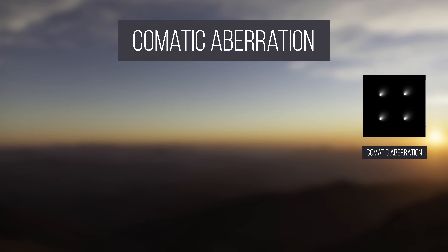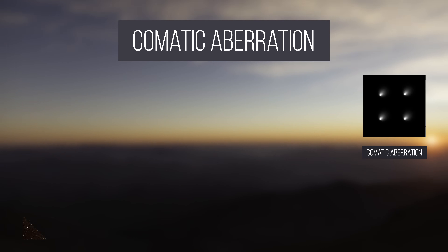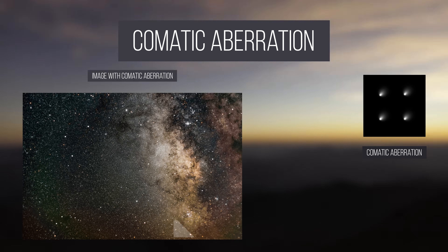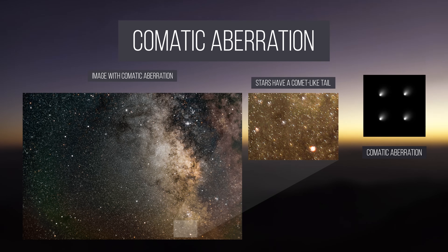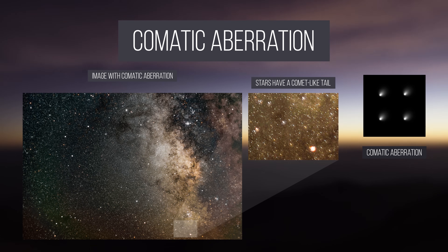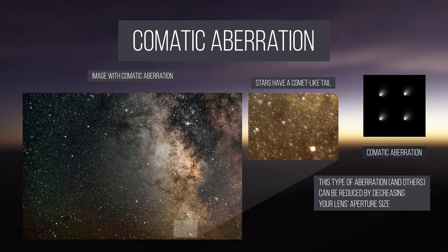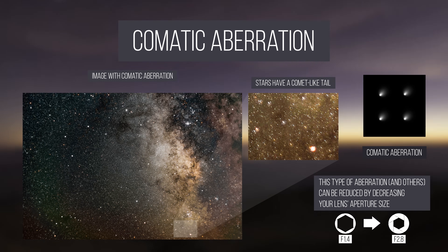Comatic aberration, or coma, causes point sources such as stars to appear distorted, often having a tail like a comet. These coma tails are most apparent near the edges of a photo. The good news is that coma disappears after stopping down most lenses one or two stops.